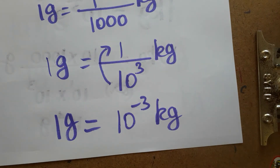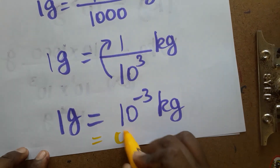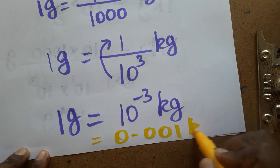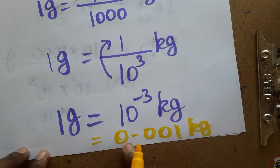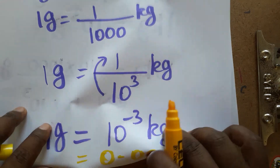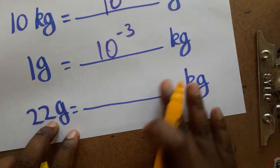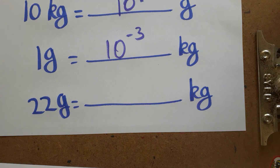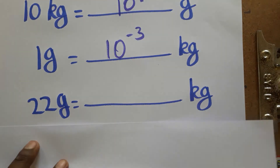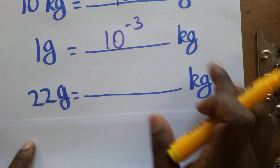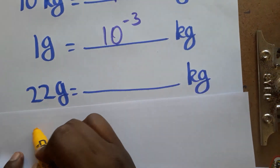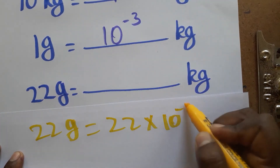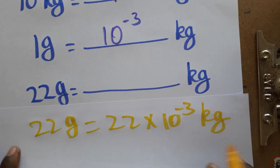So 1 gram is 10 power minus 3 kg, which we can also write as 0.001 kg. Now for the second example: 22 grams is equal to how many kilograms? Since 1 gram is 10 power minus 3 kg, 22 grams is 22 into 10 power minus 3 kilograms.